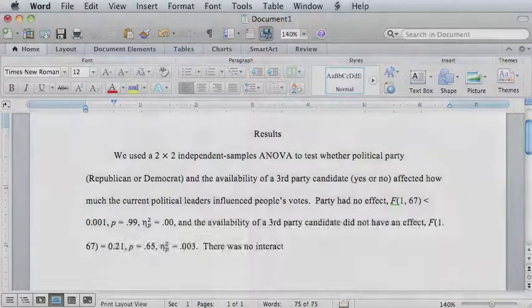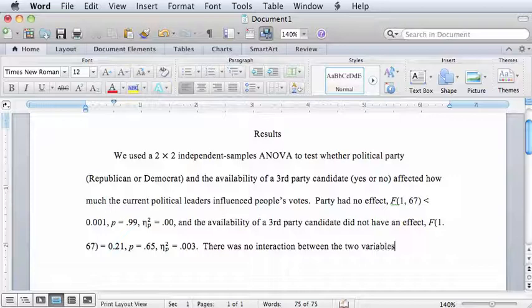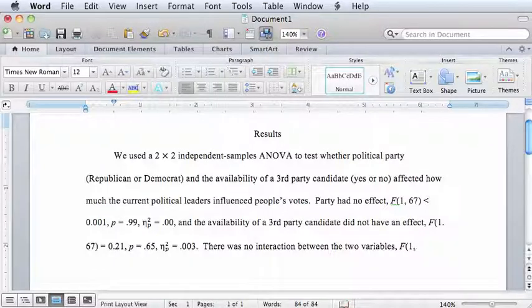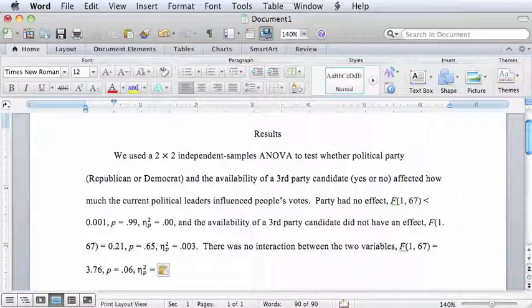The equation tool, called script, will include a box with both a sub and superscript, which you can select and then fill the boxes with the appropriate symbols. Symbols are automatically italicized in the equation editor, so make sure to unitalicize the Greek letter eta in the number 2 if it automatically italicizes those.